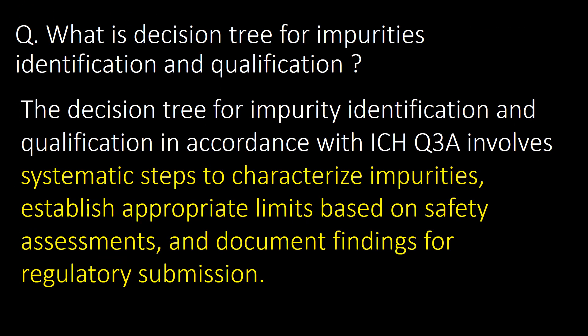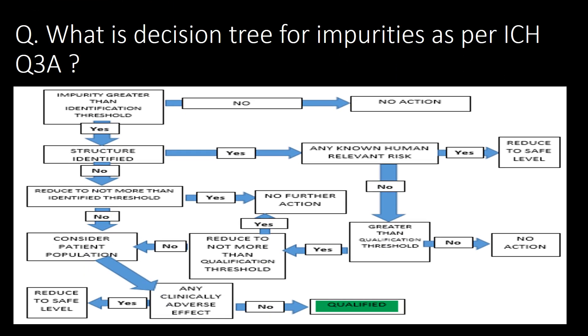What is the decision tree for impurity identification and qualification? The decision tree for impurity identification and qualification in accordance with ICH Q3A involves systematic steps to characterize impurities, establish appropriate limits based on safety assessments, and document findings for regulatory submissions. You can refer to the schematic from ICH Q3A as a decision tree for impurities.